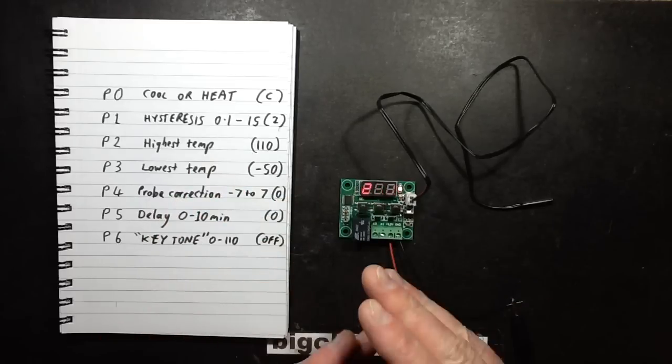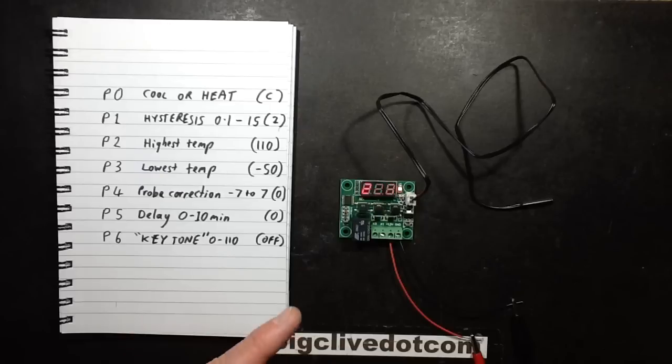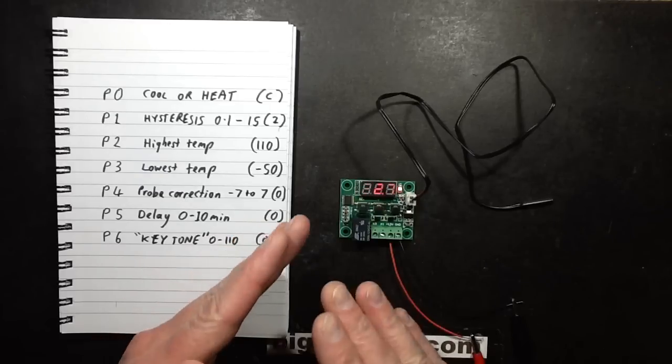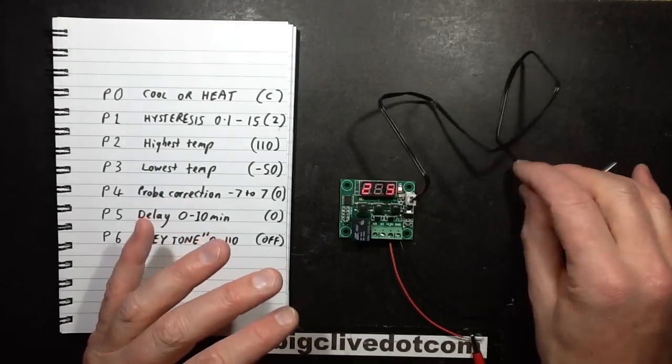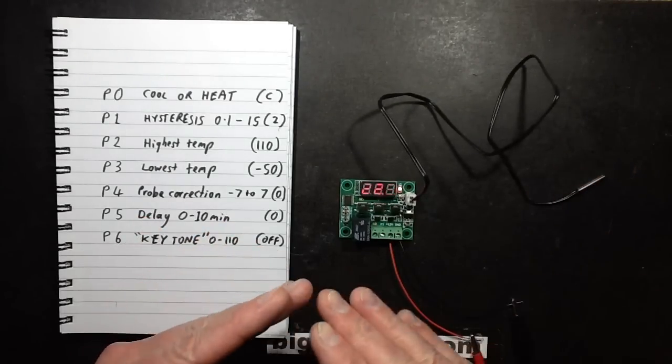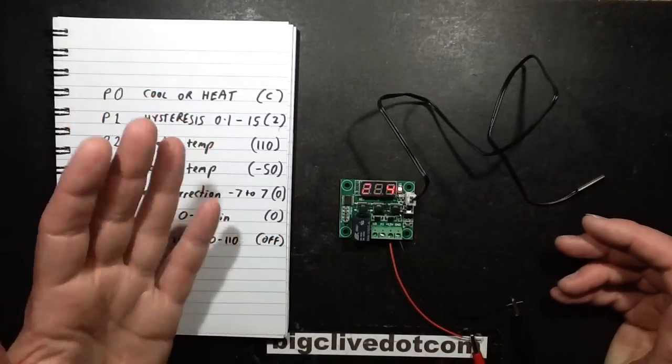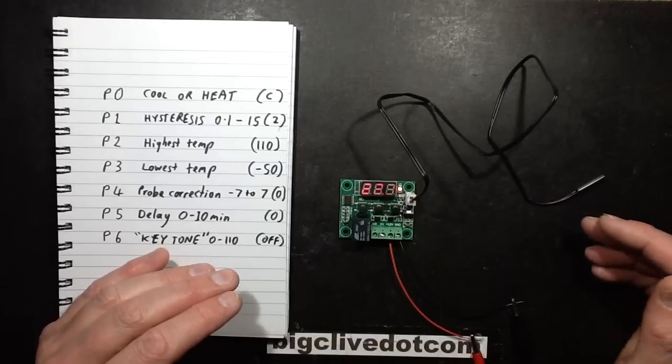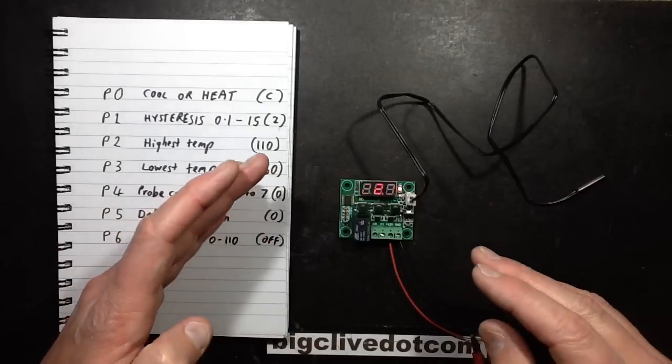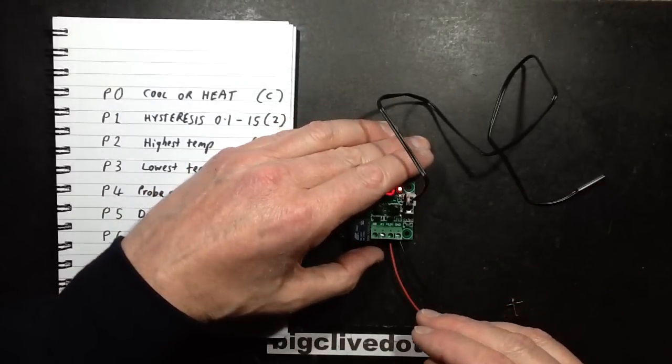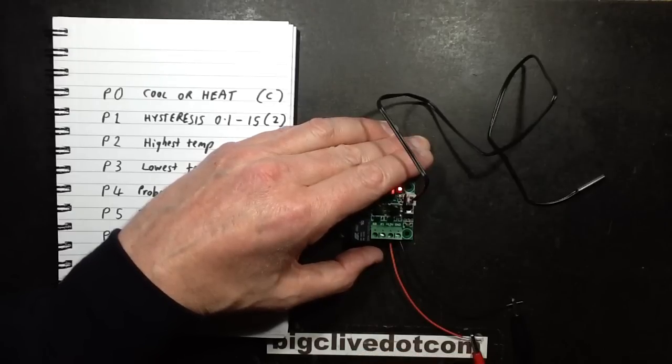The hysteresis is the difference between the on and off temperature. Because if you had it down to like a tenth of a degree accurately, then there's a possibility that stray signals being picked up by this probe or just rapid temperature fluctuations could end up with the contactor or whatever it was controlling cycling on and off continually, which isn't good. So what they do, you can program a slight temperature differential.